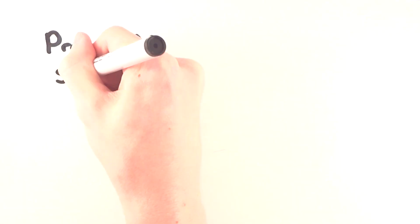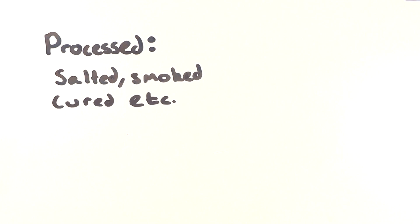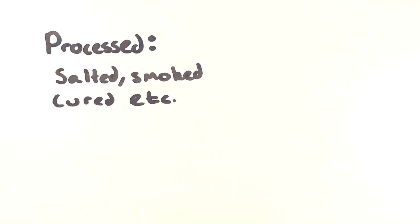First off, we need to establish the definitions for what red meat and processed meat are, because for many people this might be quite unclear. Processed meat means anything which has been salted, smoked, cured, or had any other method of preserving applied to it, basically anything which has been modified to extend its shelf life.